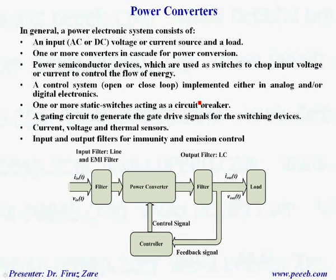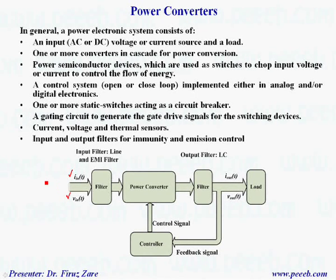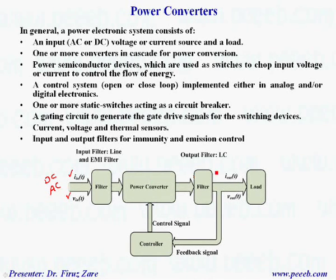In general, a power electronic system consists of an input source — it can be either a current or voltage source, and it can be either DC type or AC. We also have a load, and in most applications we have a resistive-inductive load.